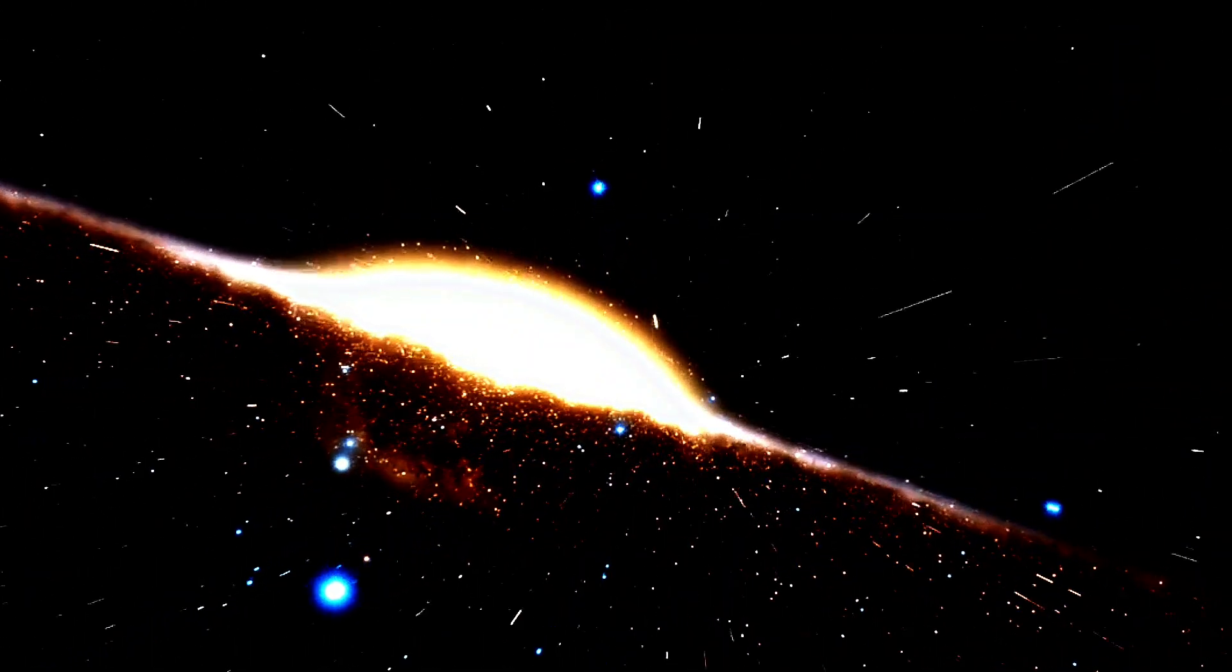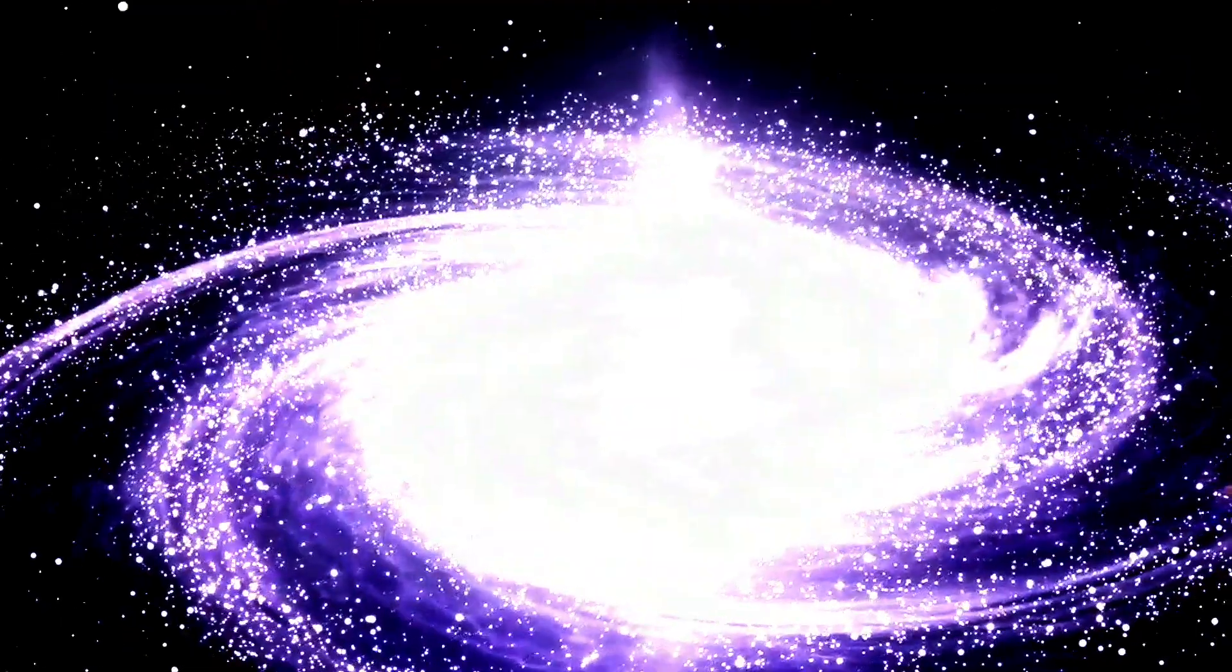Rotation curves and dark matter. One of the key pieces of evidence for dark matter comes from the observation of galactic rotation curves. Stars in the outer regions of spiral galaxies rotate at speeds that are not consistent with the visible mass alone.